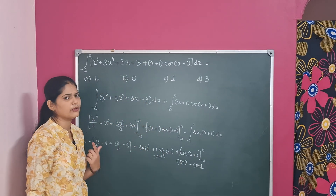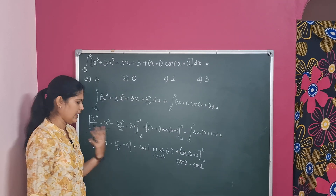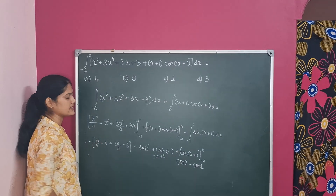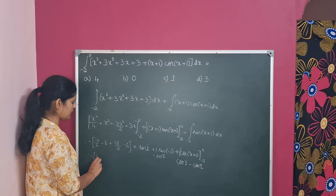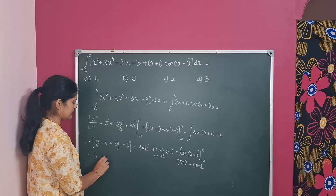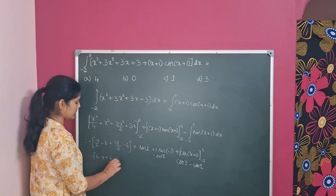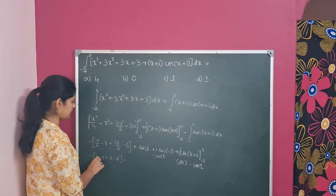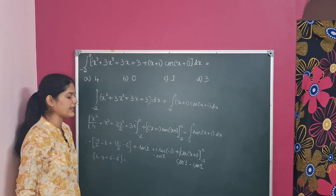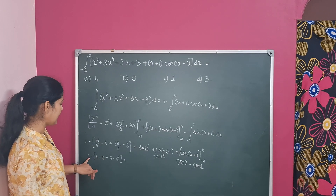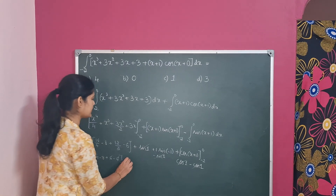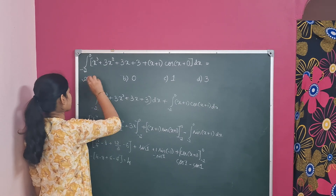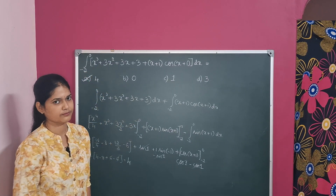Simplifying the remaining terms: minus 16/4 means minus 4, minus 8 plus 6 minus 6 gives minus(4 minus 8), which is minus of minus 4 equals 4. Therefore, the answer is option A, which is 4.